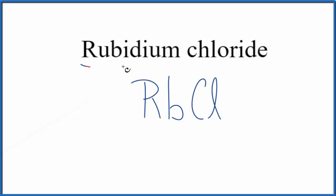We have the element symbols, but we have a metal and a non-metal. With a metal and a non-metal, that's going to be an ionic compound, and we need to take charge into account when we write the formula for rubidium chloride.